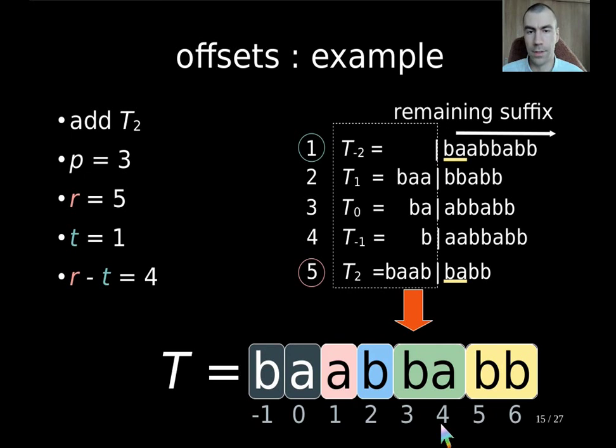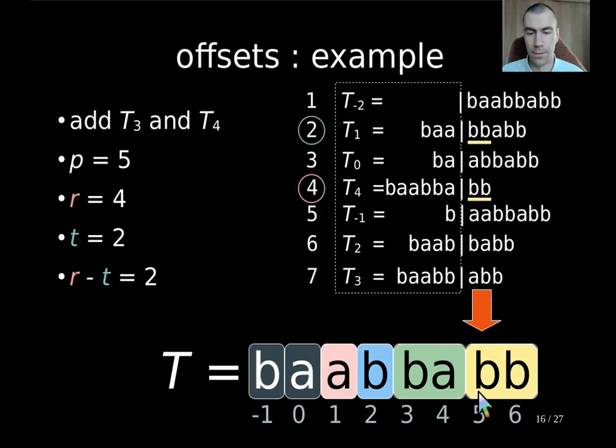Next, we add 3 and 4 into our table and query for this position. Now, the last inserted prefix is t4. It has rank 4. We have bb as our factor, and there is just another bb up there. So, this gives us this rank, and the difference is 2.